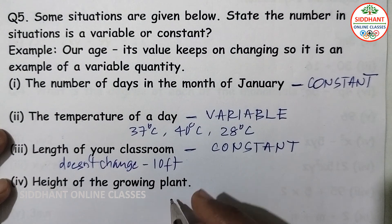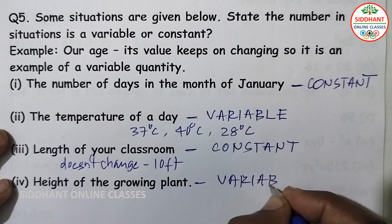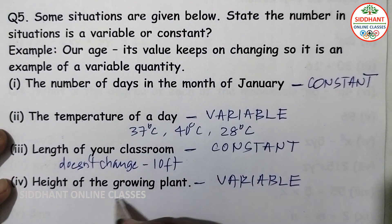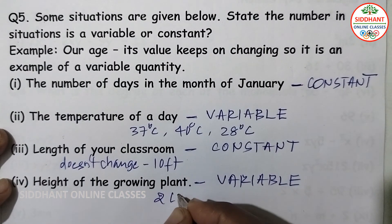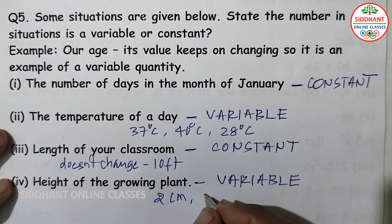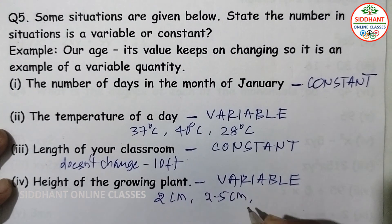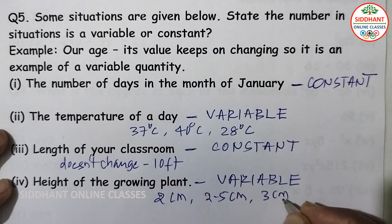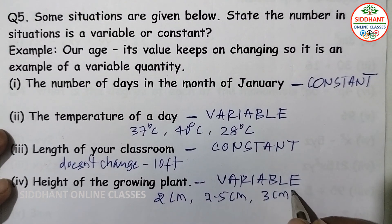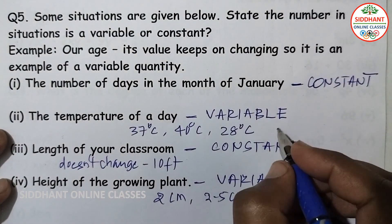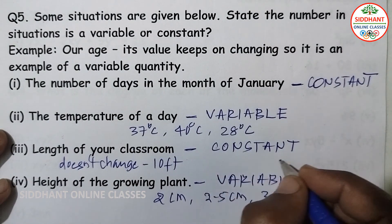Fourth, the height of a growing tree — it is an example of a variable. Today the height may be 2 centimeters; after a few days it may be 2.5 centimeters; after one month it may be 3 centimeters. So the height keeps changing. Things which change are called variables; things which don't change are called constants.